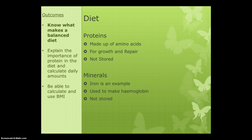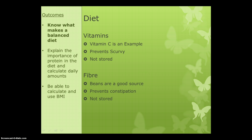The next class of chemical is minerals. Iron is the best example to use because it links back to our other topics when talking about hemoglobin. Iron is used to make hemoglobin — the chemical in red blood cells that carries oxygen around our body. Iron is something that we can't store, so we have to make sure we regularly eat the right amounts of it.